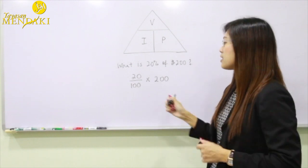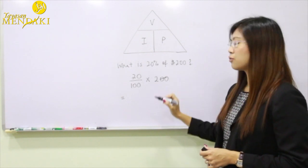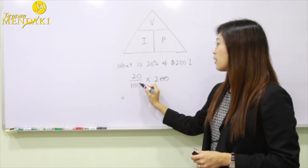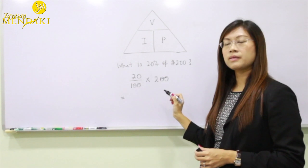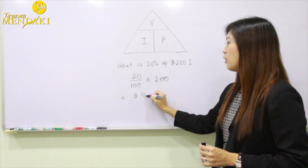Now to solve this, we're going to cancel the zeros from the 200 and the zeros from the denominator. So as a result it gets you to 20 times 2 and that will be $40.